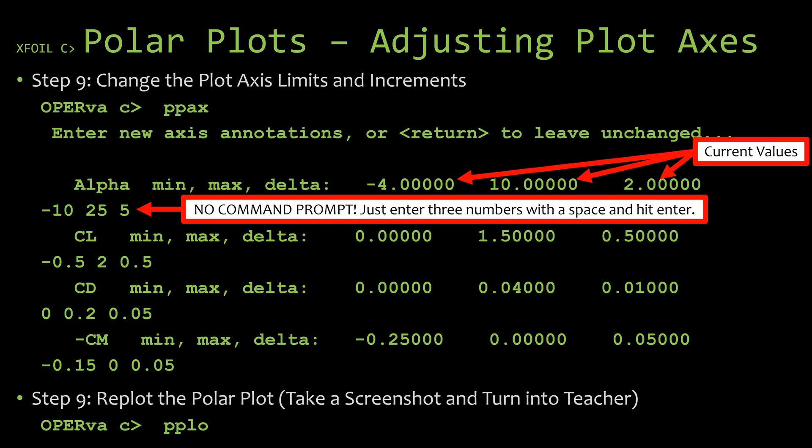Now you may notice when you first type in this command that it does not prompt you for the new values. It'll just print a line with the current values in it and then give you a blank line where you can enter the new values, and it will do this one at a time for each axis. So if you go and type PPax at the command prompt and hit enter, it's going to print out alpha, min, max, delta and give you the current values. Now since my analysis was a sequence of alphas from -8 to 26, I'm going to be using similar values for the alpha axis limits. So I went ahead and used -10 as the min, I used 25 for the max, and I chose a delta of 5 degrees.